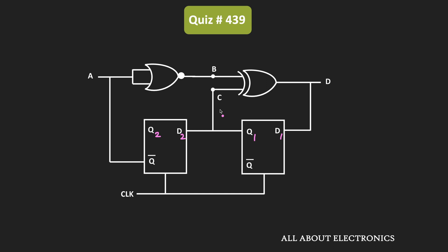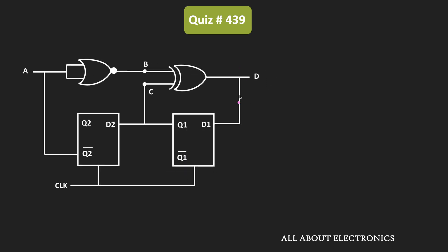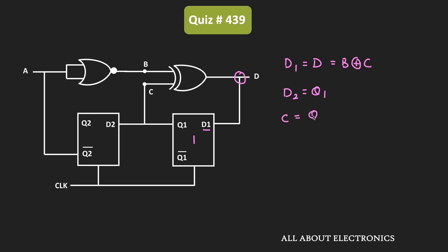First, let us find the relationship between the inputs A, B, C, and D in terms of the outputs of the flip-flops. Let's call the flip-flops D1 and D2 with outputs Q1 and Q2 respectively. The D input is connected to D1, so D1 = D. And D is equal to B XOR C, which means D1 = B XOR C. The output of the first flip-flop is given to D2 as well as the C input, so D2 = Q1 and C = Q1.